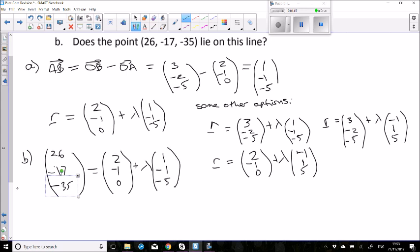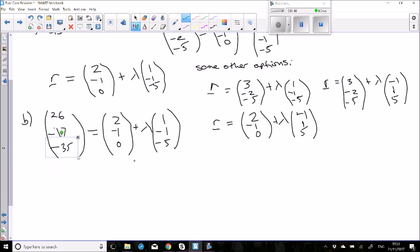Once we've done that, in order for this to be true, we have to find a value of lambda that works for all the components of its coordinates. So for the x coordinate, 26 equals 2 plus lambda. In the y, we've got negative 17 equals negative 1 take away lambda, so reading off the line here.